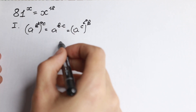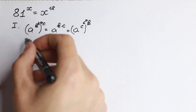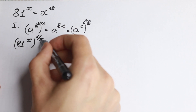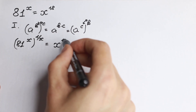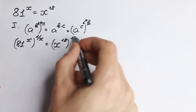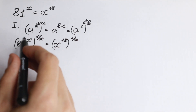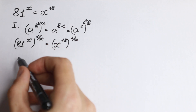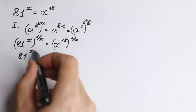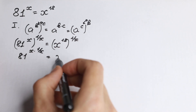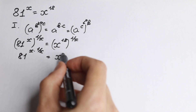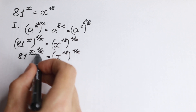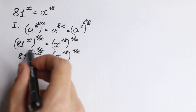First, let's raise both sides to the power 1 over x. If we raise the left side, we have 81 to the power x raised to the power 1 over x, equal to x to the power 18 raised to the power 1 over x. Next, let's use the power rule and multiply x times 1 over x. So we have 81 to the power x times 1 over x, equal to x to the power 18 to the power 1 over x. The product x times 1 over x equals 1 because x and x cancel.